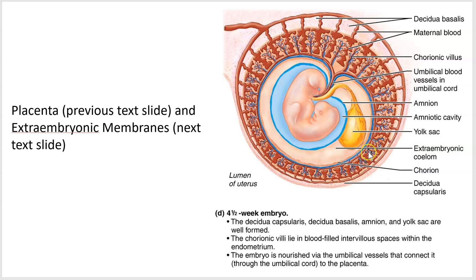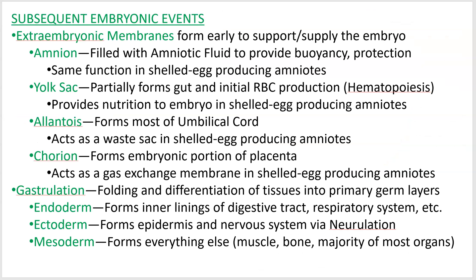So here are the things I'm going to be pointing out: the extra-embryonic membranes. There are four of them — the chorion, yolk sac, amnion, and allantois. The allantois is actually going to be right here, though they don't show it in this image. You have to know what it is. There are four extra-embryonic membranes.